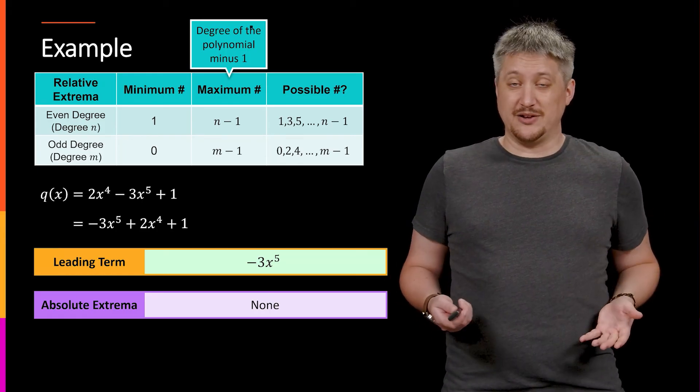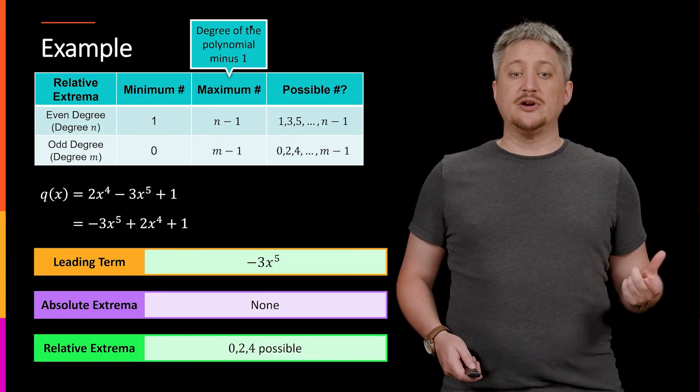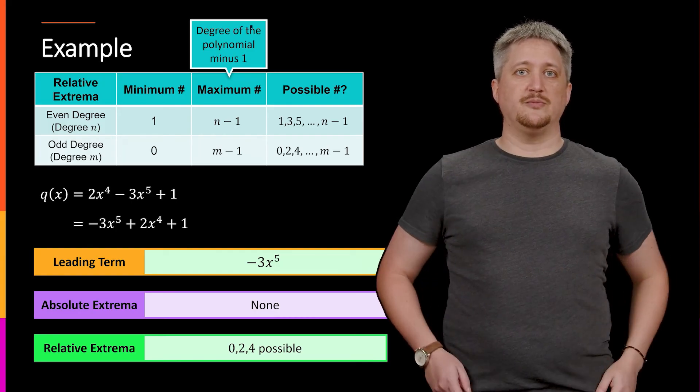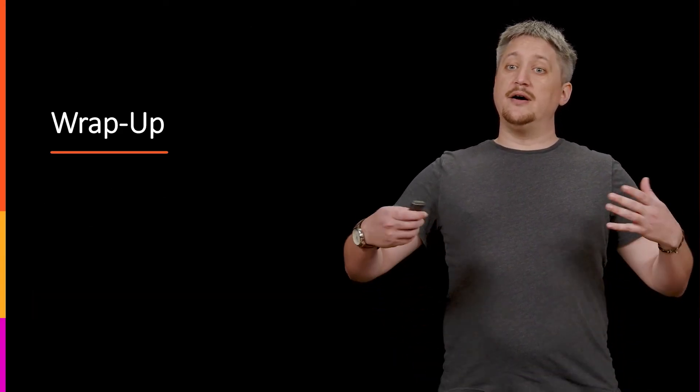So degree minus 1, 5 minus 1 is 4. So I could have 0, 2, or 4 as my possible zeros.